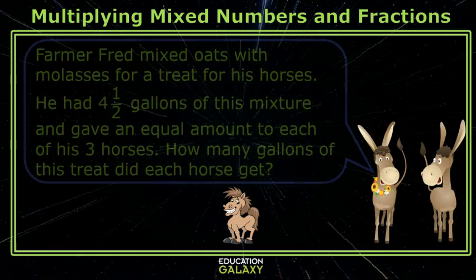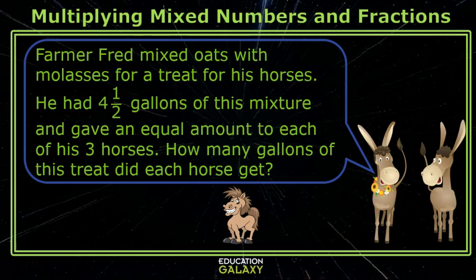Good, Melvin. Here's another one. Farmer Fred mixed oats with molasses for a treat for his horses. He had four and a half gallons of this mixture and gave an equal amount to each of his three horses. How many gallons of the treat did each horse get?